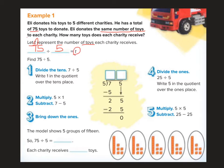First we're going to divide the tens. Seven divided by five is one. We're going to write one in the quotient place over the tens place. Then I'm going to multiply five times one, and that's five — that number goes in right here. Then I subtract: seven minus five is two. And then I bring down.